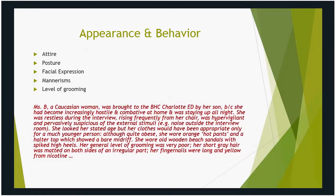For example: 'Miss B, a Caucasian woman, was brought to the BHC Charlotte ED by her son because she had become increasingly hostile and combative at home and was staying up all night. She was restless through the interview, rising frequently from her chair, hypervigilant and pervasively suspicious of external stimuli — for example, noise outside the interview room. She looked her stated age, but her clothes would have been appropriate only for a much younger person. Although quite obese, she wore orange hot pants and a halter top showing a bare midriff. She wore old wooden beach sandals with spiked high heels. Her general level of grooming was very poor; her short gray hair was matted on both sides of an irregular part; her fingernails were long and yellow from nicotine.' This demonstrates how to describe someone's appearance and behavior.